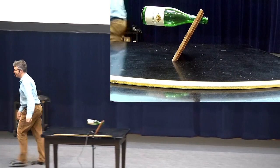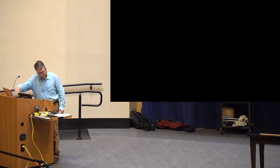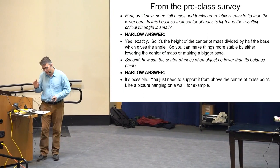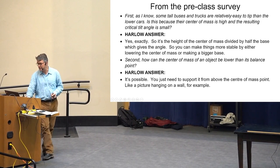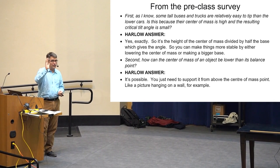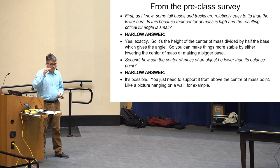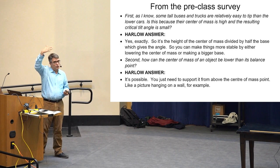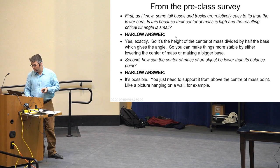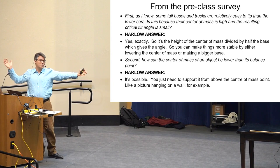Similar kind of idea: if the center of mass is over the base, it doesn't tend to tip. Some comments from this morning's pre-class survey — a student noted that tall buses and trucks are relatively easy to tip compared to lower cars: is that because the center of mass is high and the critical tilt angle is small? Exactly. It's the ratio of the center-of-mass height to half the base width — tan⁻¹ of that ratio gives you that angle. To make something more stable, you can lower the center of mass height or make the base wider, which increases the tipping angle.